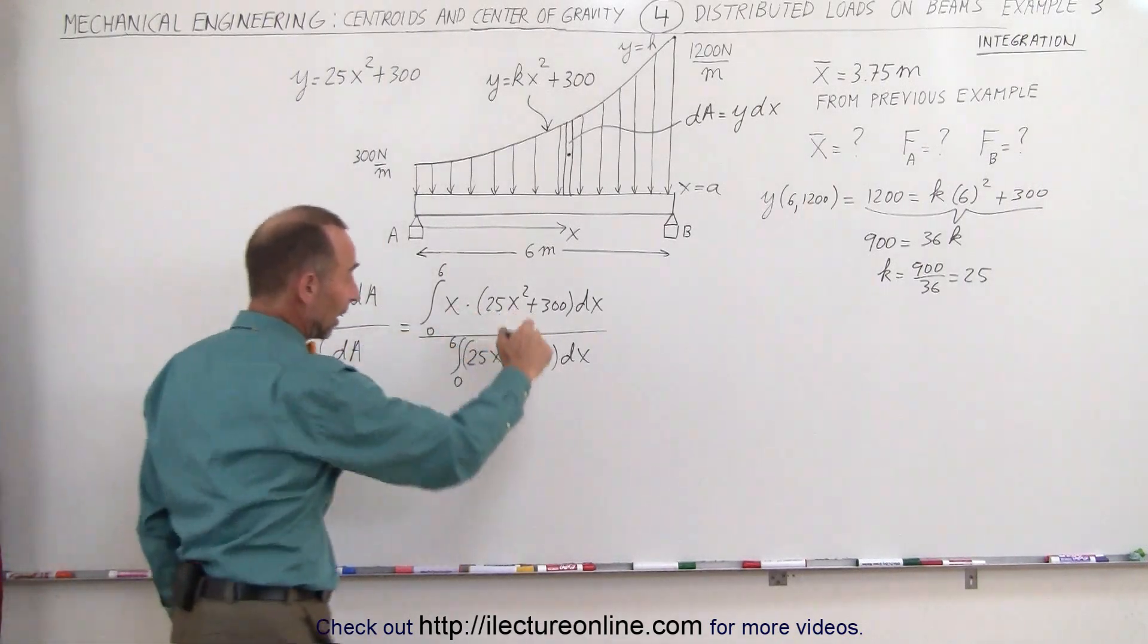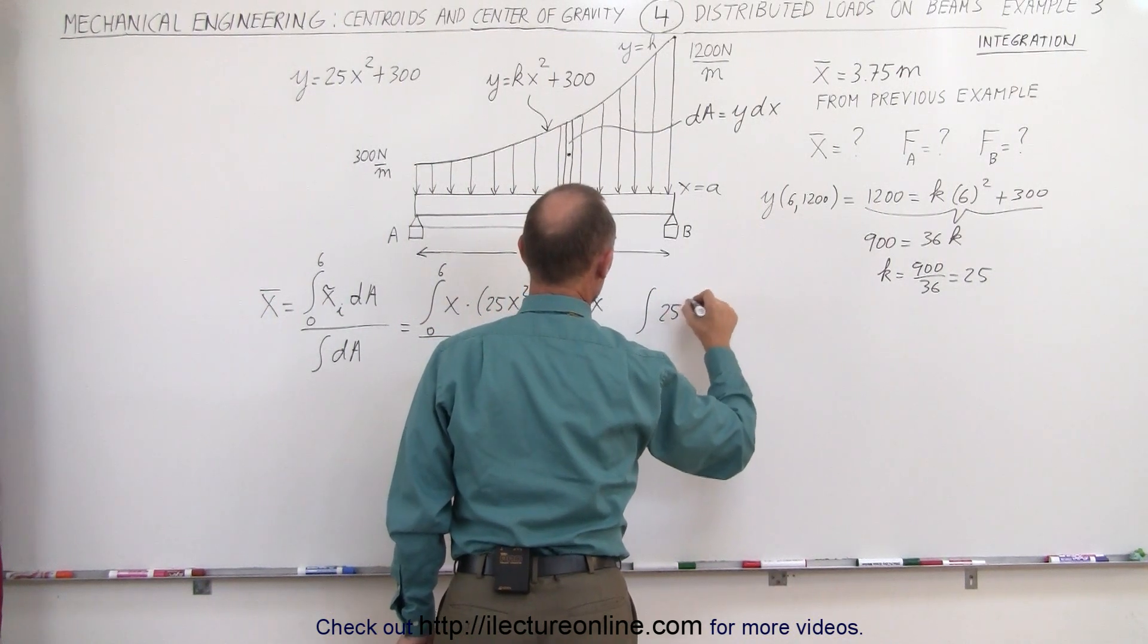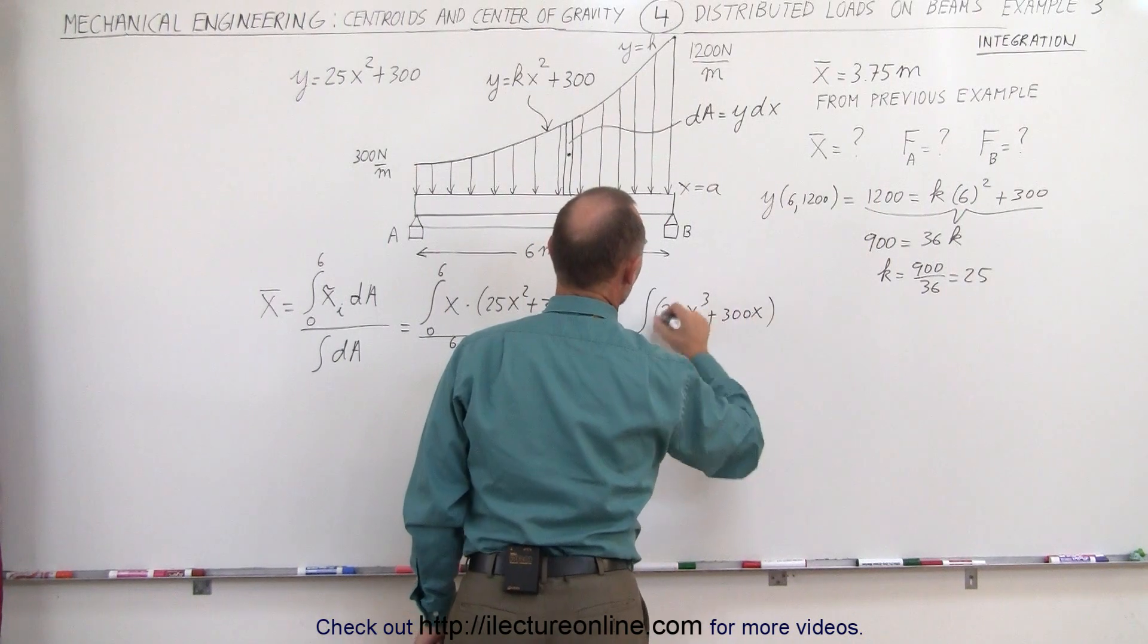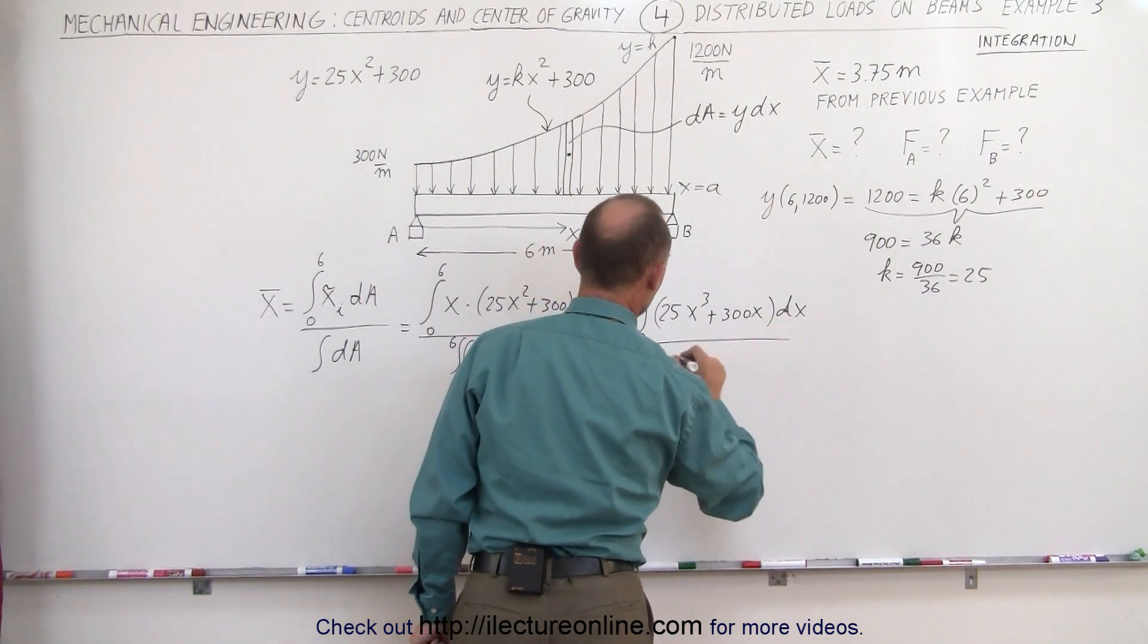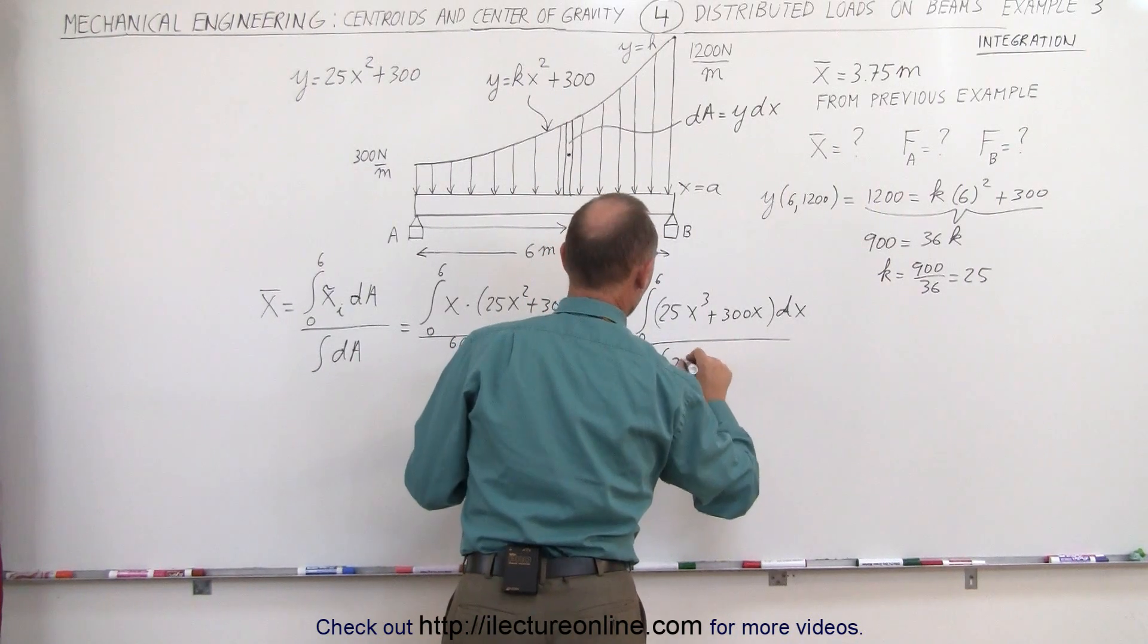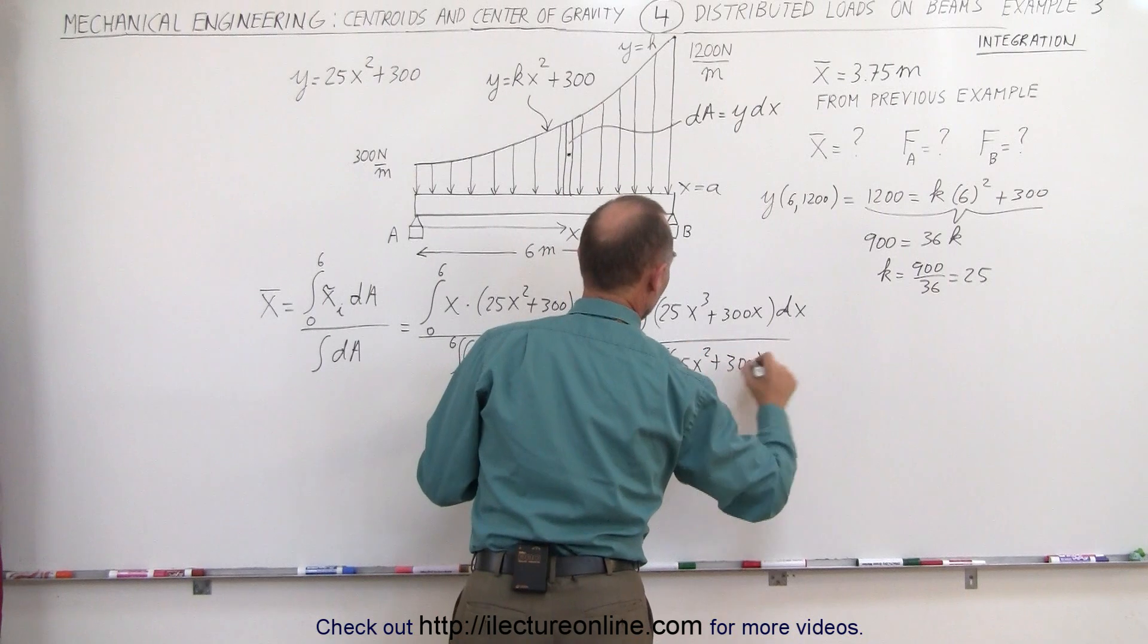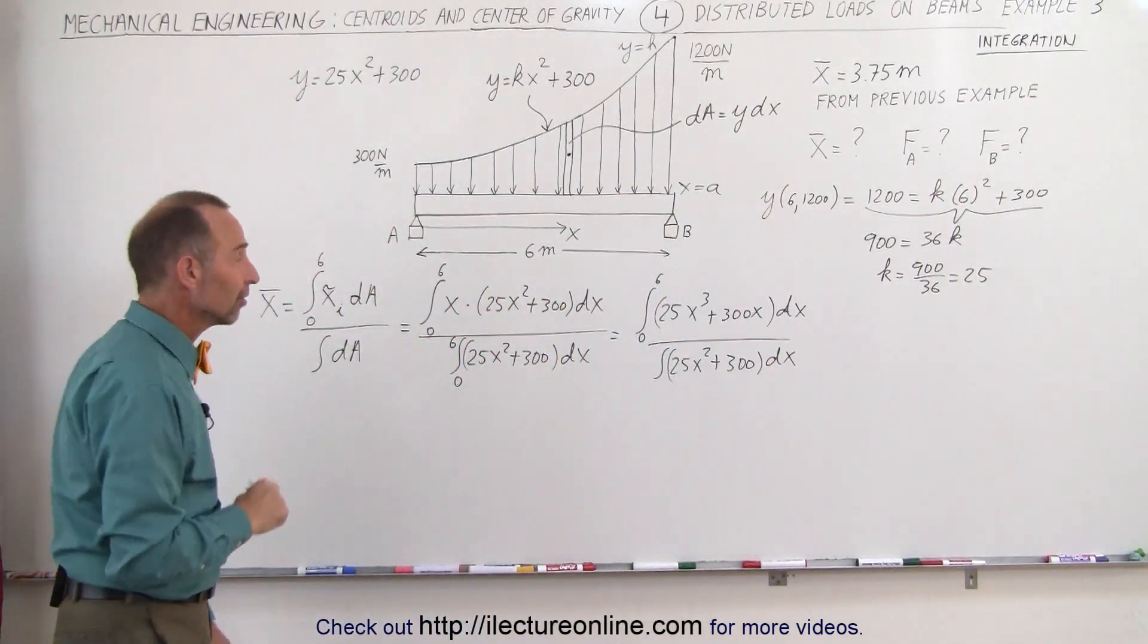Multiplying this out we get the integral of 25x cubed plus 300x times dx from 0 to 6, divided by the integral of 25x squared plus 300 times dx. And now we can go ahead and integrate, find the limits, and find the centroid that way.